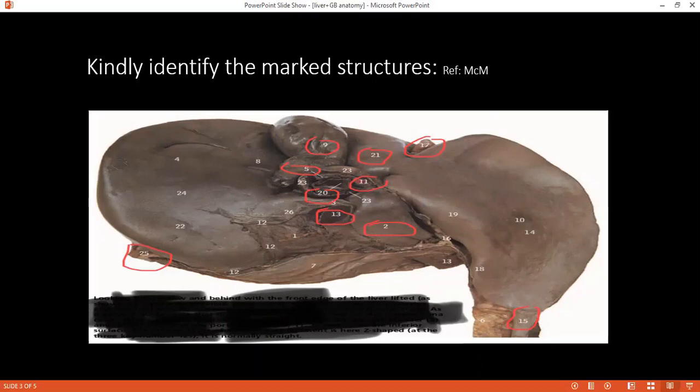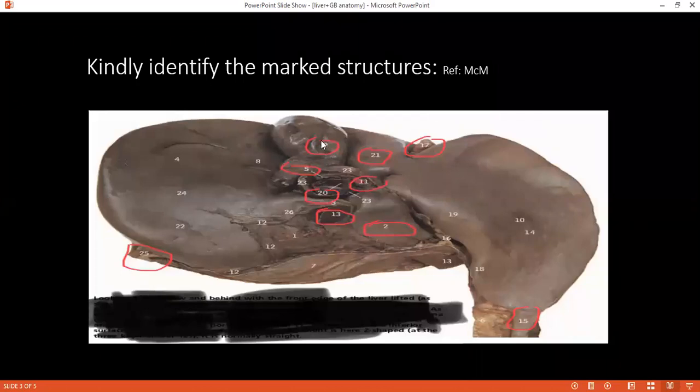Can you please identify structure? Where is my cursor? Nine, please. Thirty is gallbladder. Then five below gallbladder. Five is common hepatic duct.